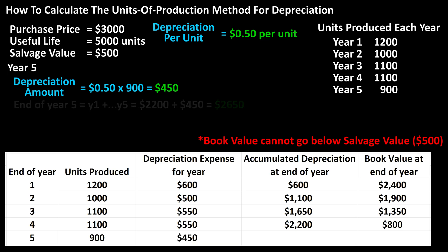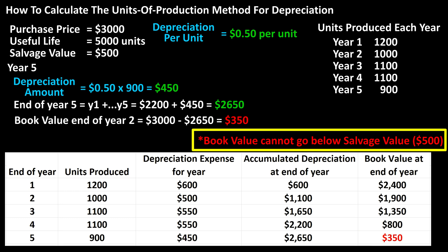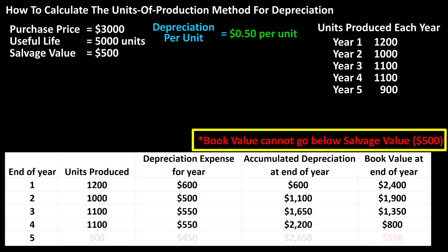The accumulated depreciation will be the depreciation for years one through four plus the depreciation expense for year five of $450, which equals $2,650. The book value would be $3,000 minus $2,650, which equals $350. However, we cannot have a book value of $350 — the book value cannot go below $500. So we need to make changes to year five so that we have a final book value of $500.